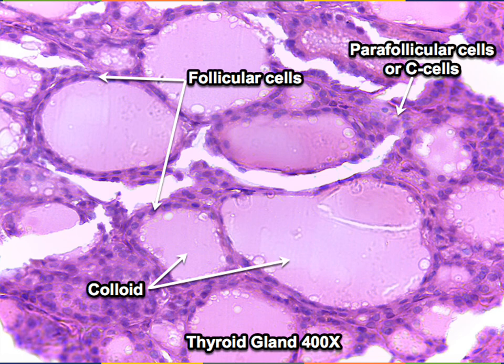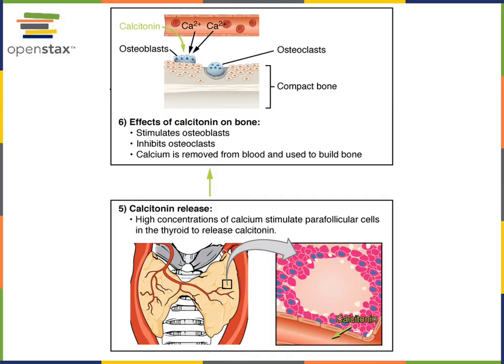There are also parafollicular cells, or C cells, found in the thyroid gland. These cells respond to high blood calcium levels, also known as hypercalcemia. Hypercalcemia stimulates the C cells to release the hormone calcitonin. In response to hypercalcemia, calcitonin released from C cells binds to receptors on osteoblasts in bone, stimulating osteoblasts to store calcium in the bone. Calcitonin also inhibits osteoclasts, reducing the rate of calcium reabsorption from the bone.